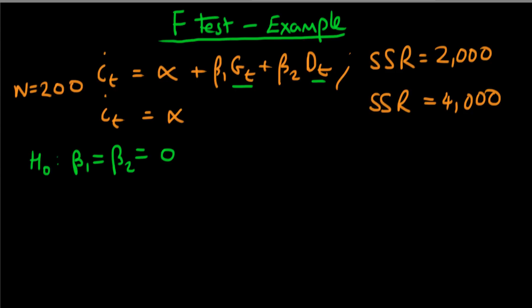To provide a little context, the regression we're discussing is trying to explain interest rates — this could be interest rates on government debt. We're asking whether they depend on government spending and also on the level of debt a country has. Under traditional theory, public spending may crowd out private investment, so you'd expect beta1 and beta2 to both be greater than zero.